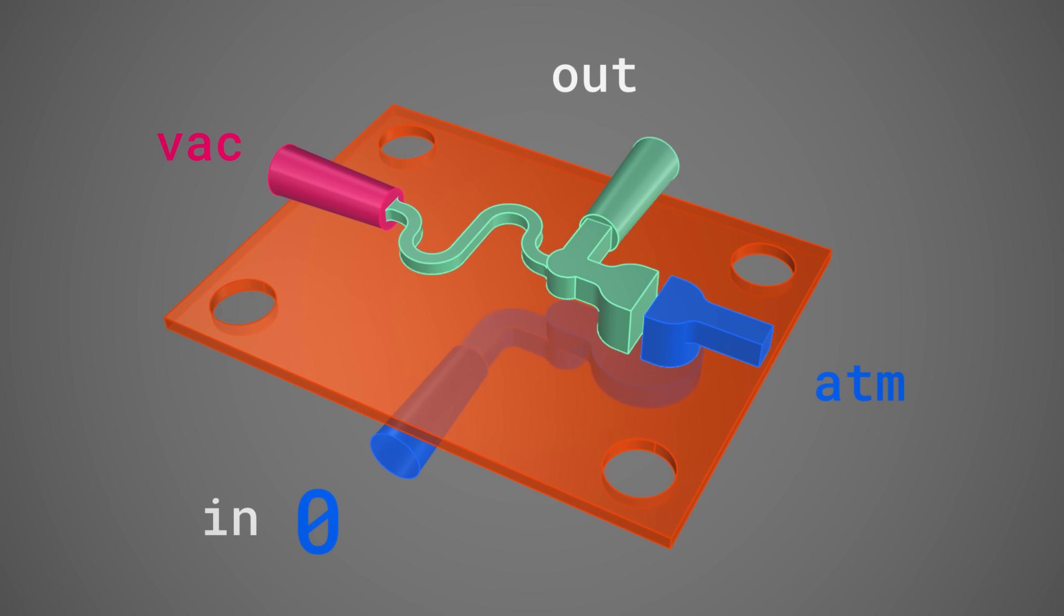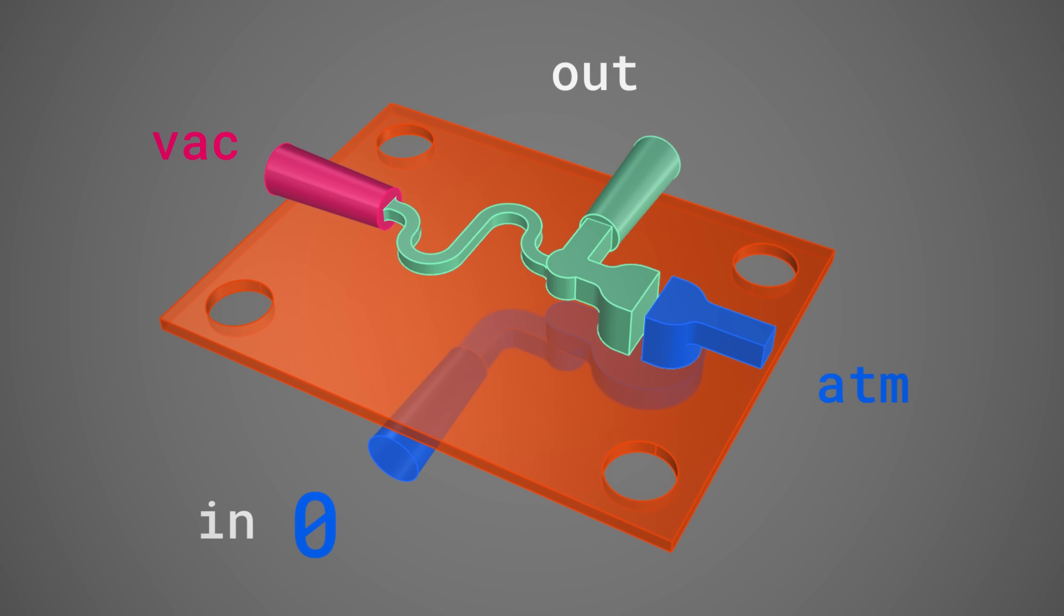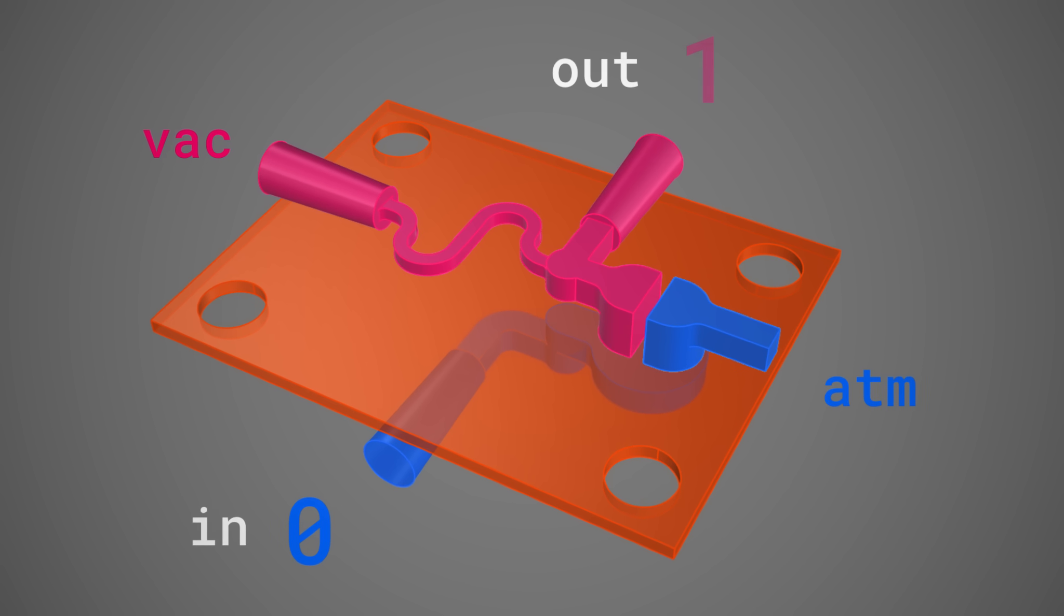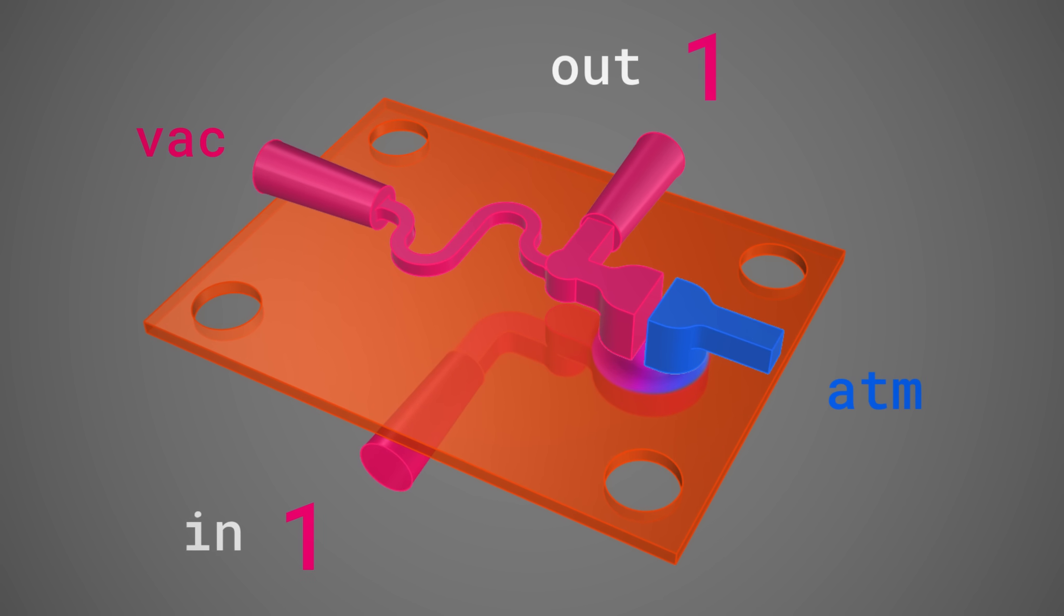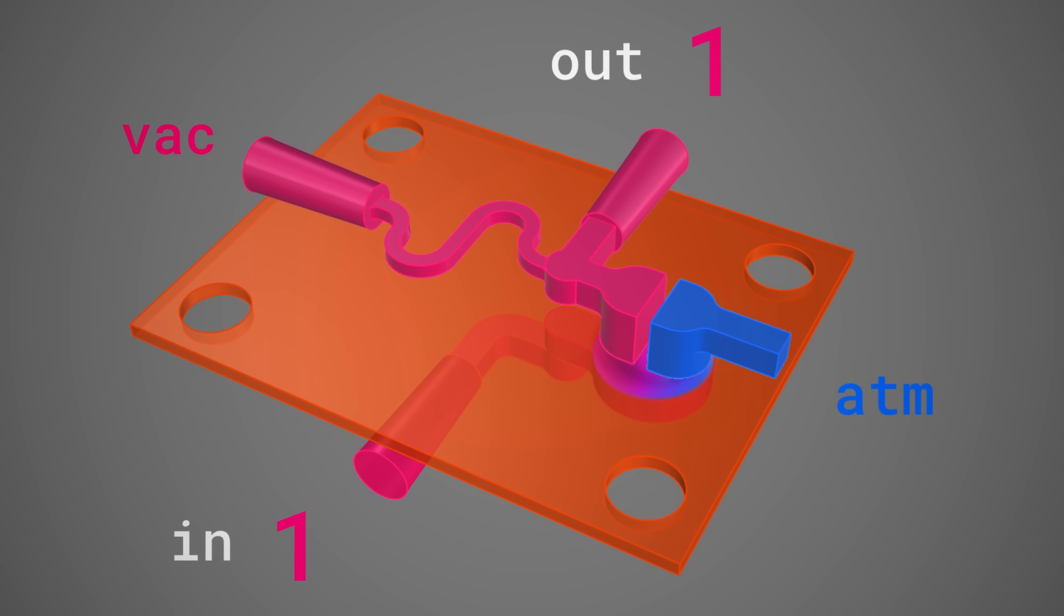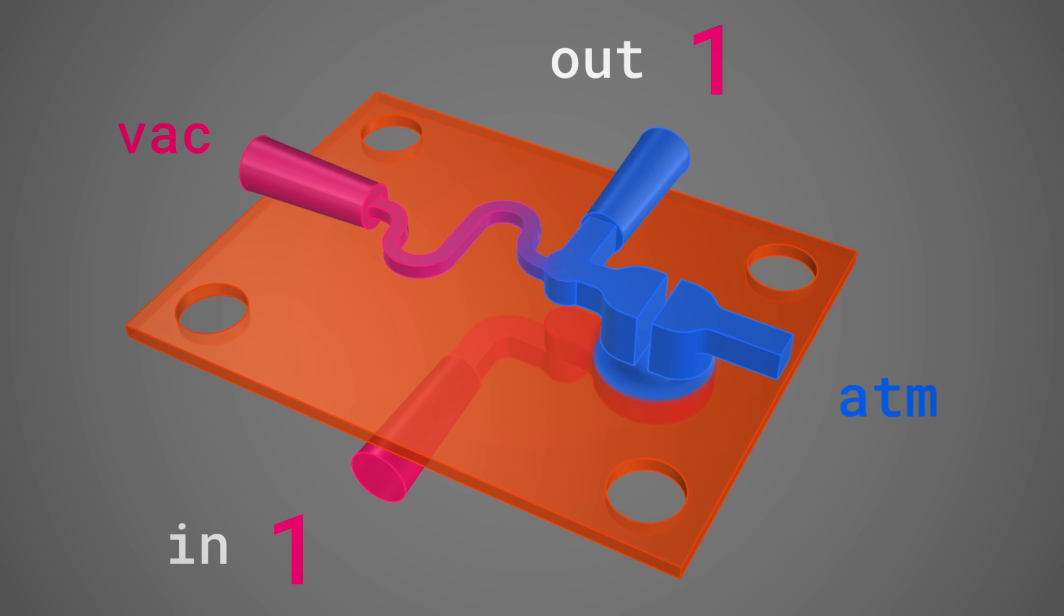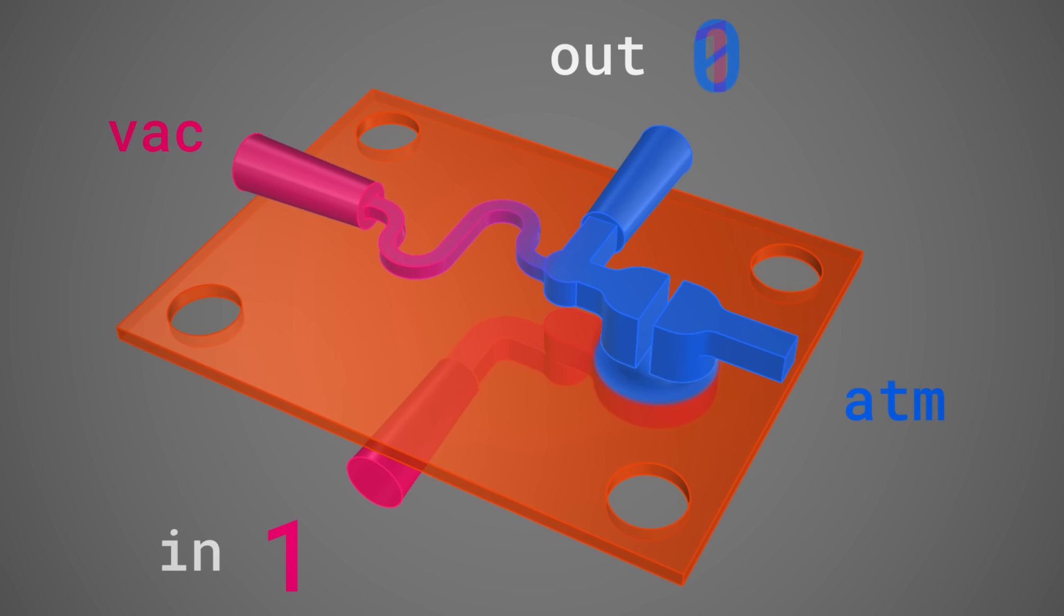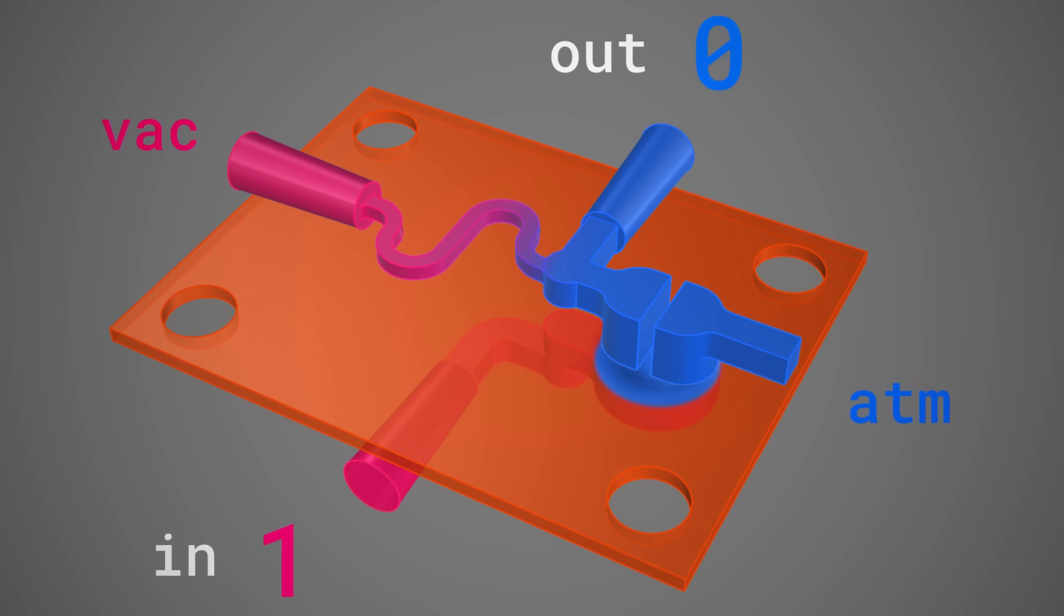When the input is 0, atmosphere, the transistor stays closed. Vacuum flows through the resistor and the output goes to 1. But when the input is 1, vacuum, the transistor opens. Now vacuum and atmosphere both fight for the output. But since vacuum has to go through that tiny resistor, atmosphere wins. And the output flips to 0.